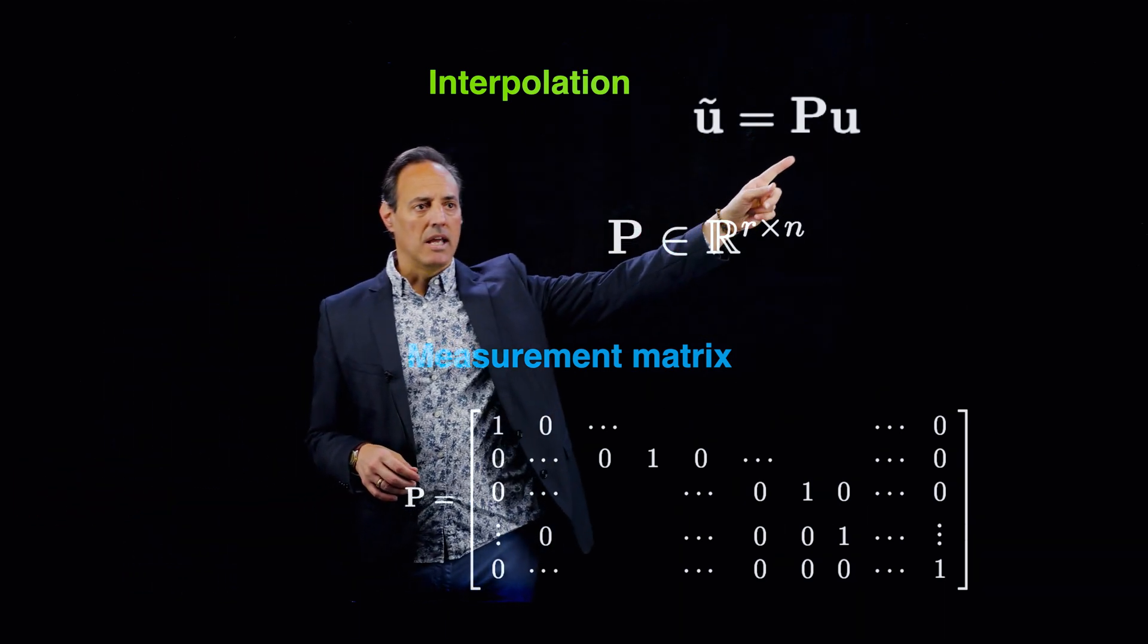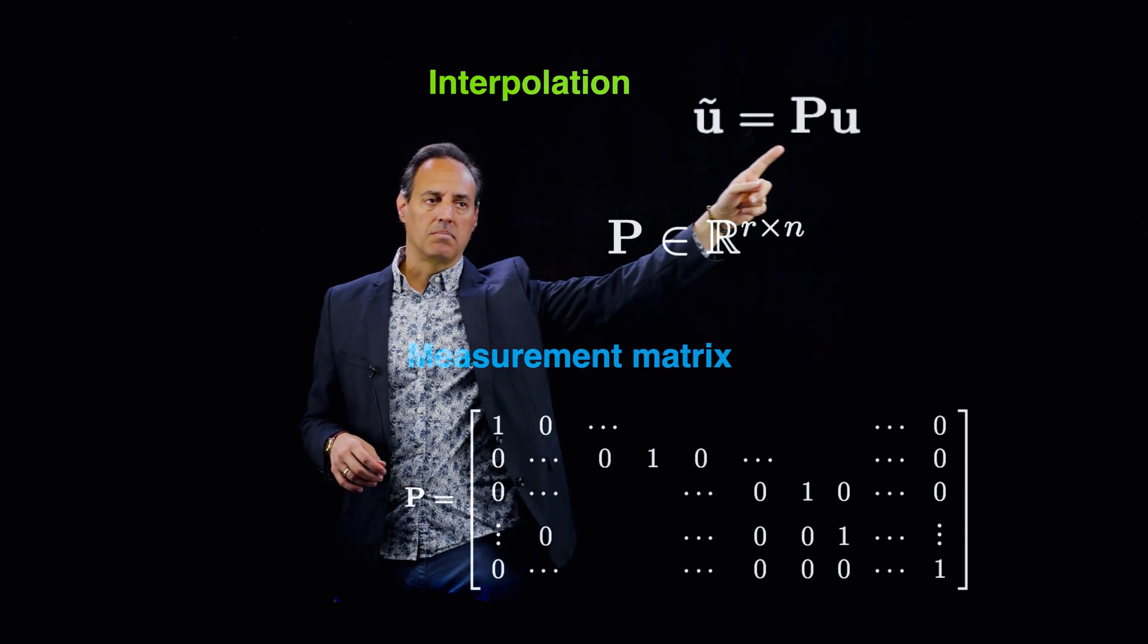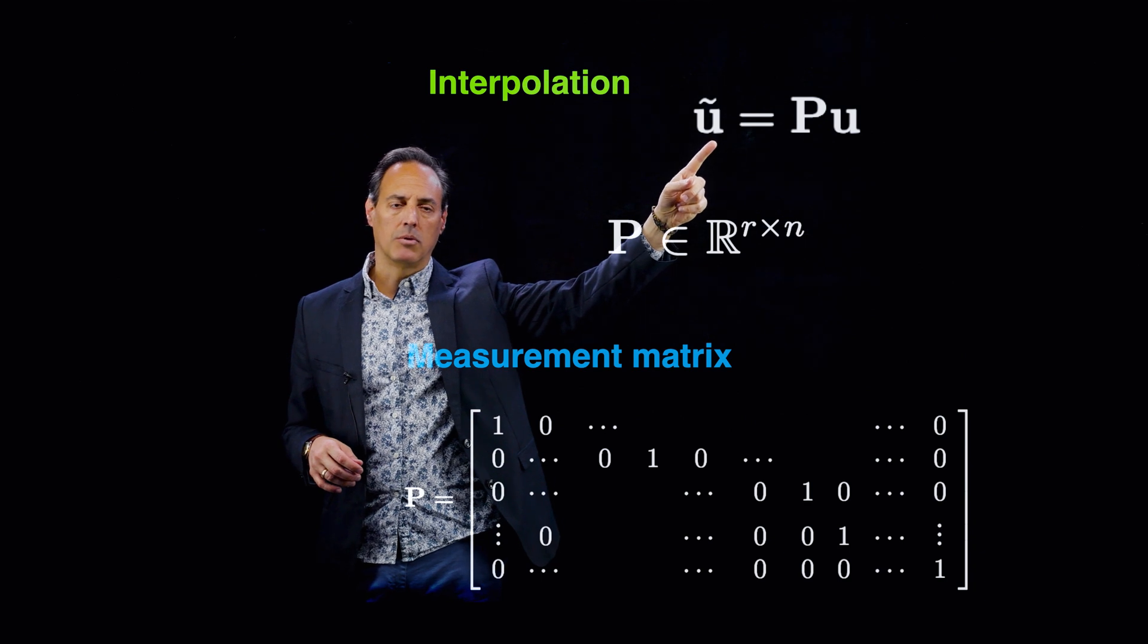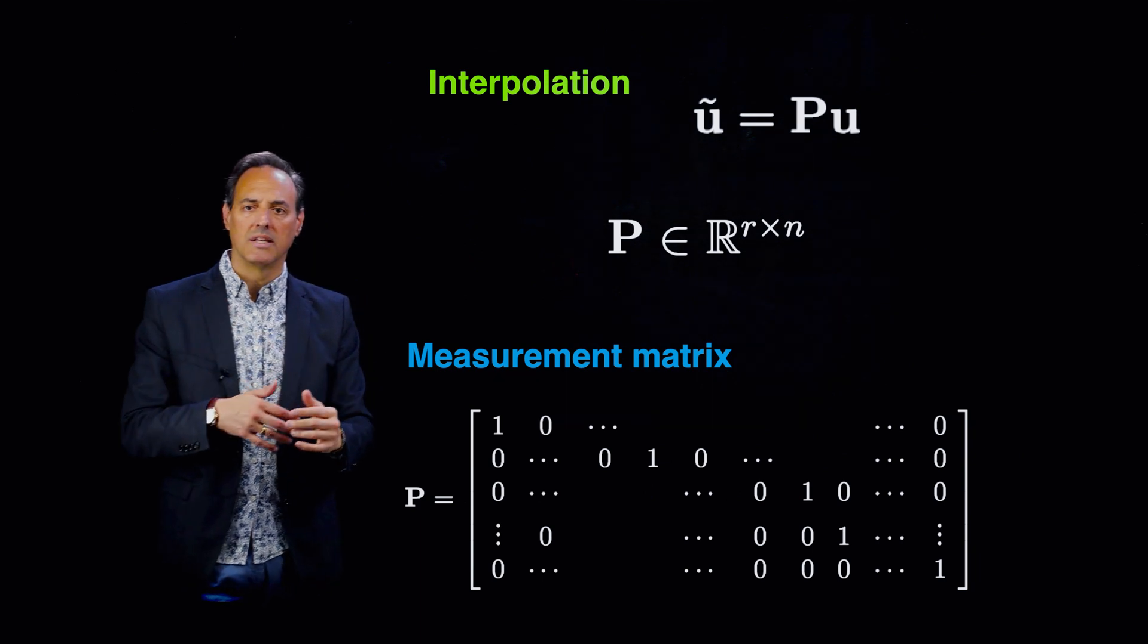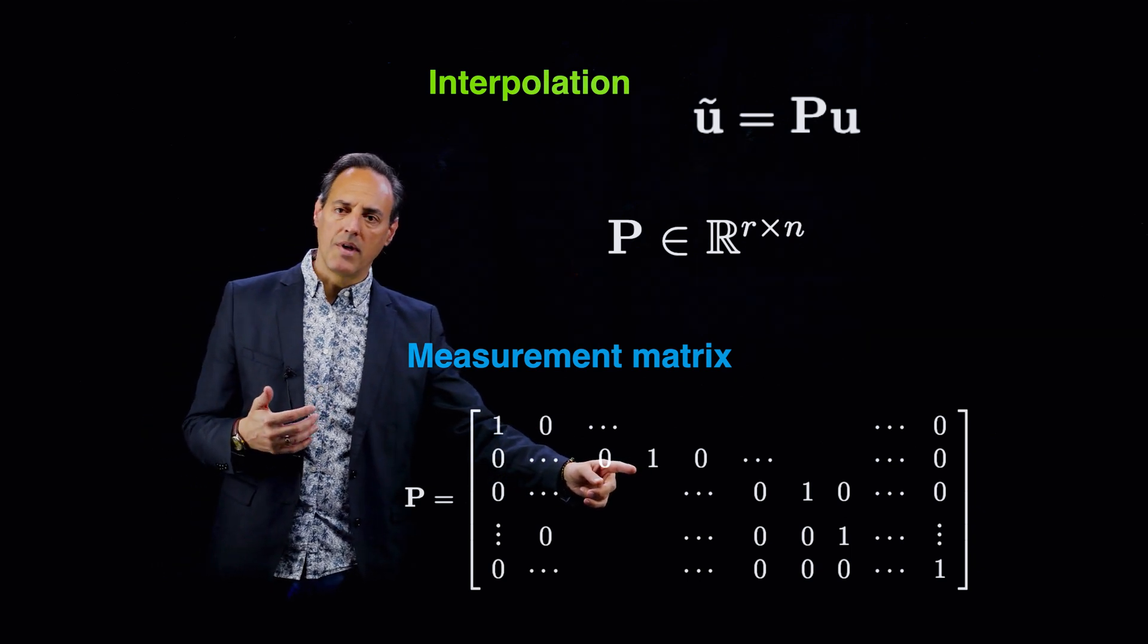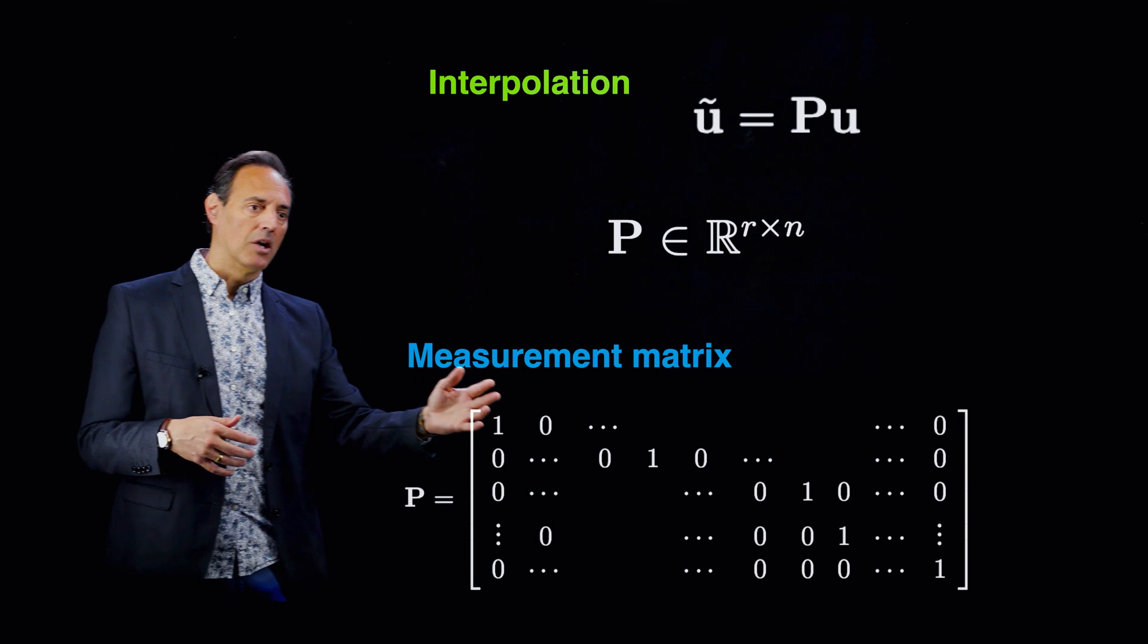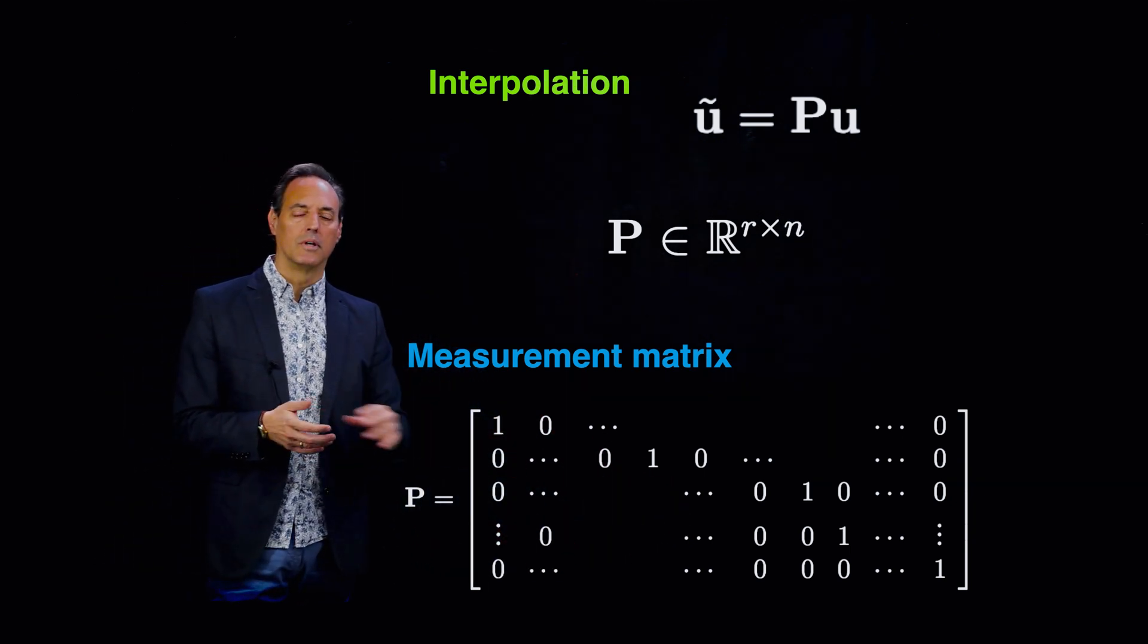Here's the idea: take some measurement matrix P on the full n-dimensional state space to produce a subspace representation which is r-dimensional. The measurement matrix itself are r rows of the identity—it tells you which points you're going to measure. Wherever you're going to measure in some point, there's a one there and zero everywhere else. You have r measurements, so r rows of the identity matrix are going to show up here.